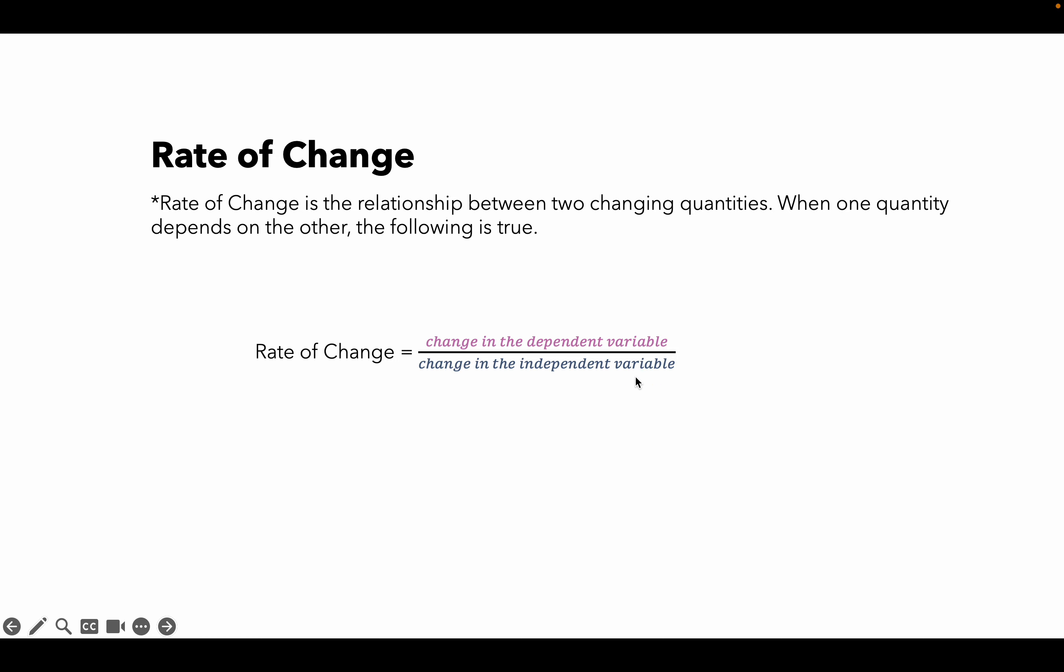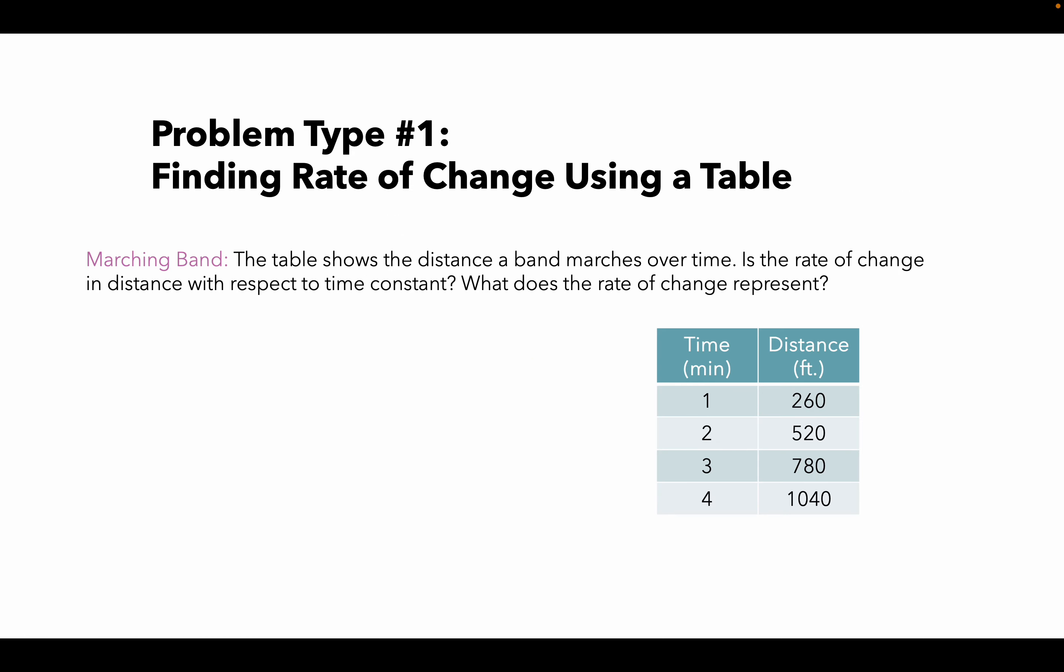Problem type number one: finding rate of change using a table. Here's a marching band problem. The table shows the distance a band marches over time. Is the rate of change in distance with respect to time constant? What does the rate of change represent? Let me grab my pencil here so I can do the math for you.